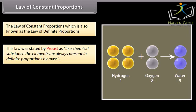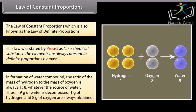In formation of water compound, the ratio of the mass of hydrogen to the mass of oxygen is always 1 is to 8, whatever the source of water. Thus, if 9 grams of water is decomposed, 1 gram of hydrogen and 8 grams of oxygen are always obtained.